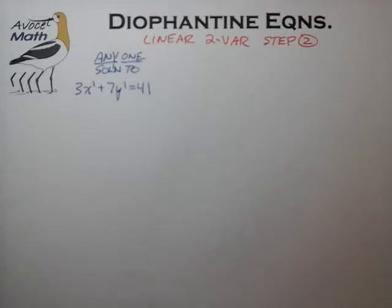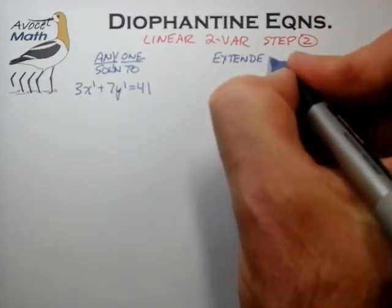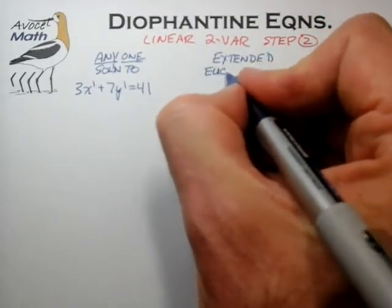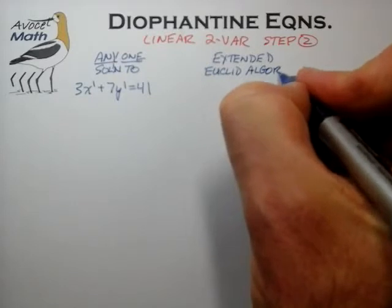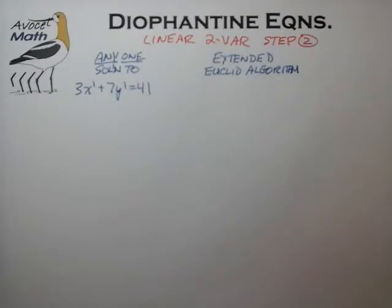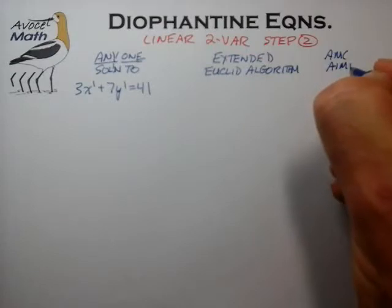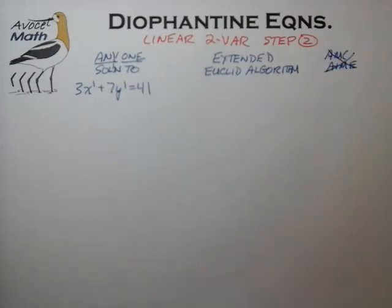There is in fact a systematic way to find this single solution, called the Extended Euclidean Algorithm. You could look it up on Wikipedia. It's a purely mechanical process, and it's not something that has ever been tested on the AMC or the AIME, to my knowledge. It's good to know if you're programming a computer, and it's good to know that an efficient algorithm exists, but for the type of testing you'll encounter, it's not something you'll need to know.